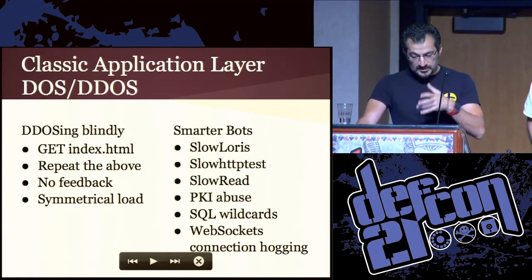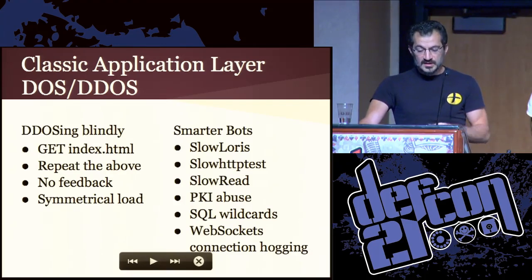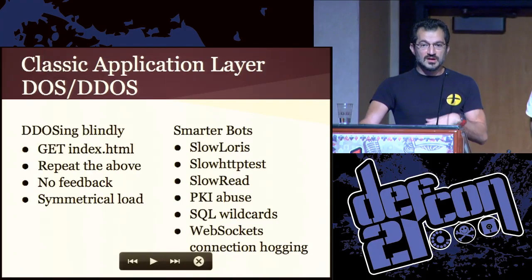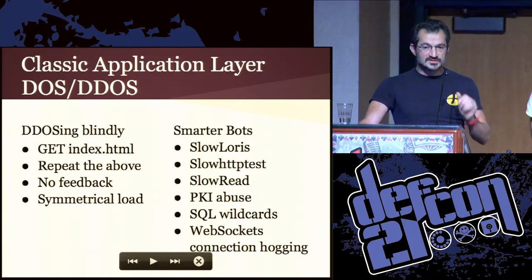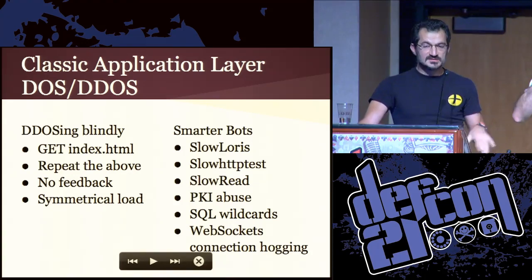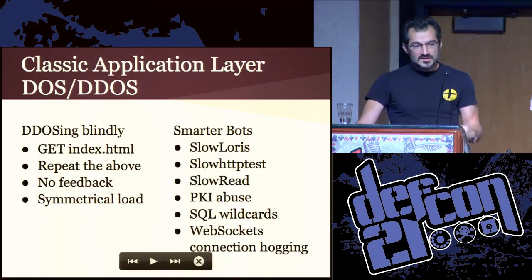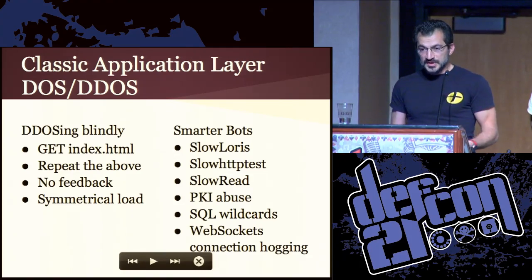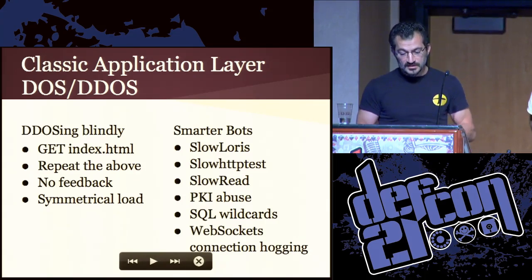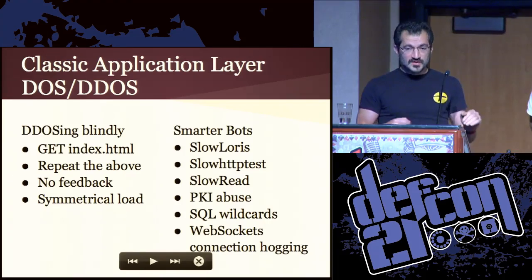So we're going to talk about application layer DoS tools or methods. For us, those tools in the application layer are of two different kinds. There are some that are not that smart, and another group that is a bit smarter. The non-smart approach is just pushing the resource over and over, hoping that the resource will die — you do that from multiple instances and it works. But that doesn't have feedback sometimes and the load is near symmetrical. Smarter bots like Slow Loris, Slow HTTP test, PKI abuse and whatnot — they are smarter and asymmetrical in nature. Our proposed method is going to be striving to be asymmetrical.